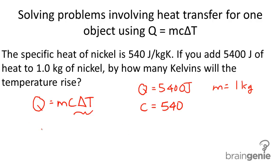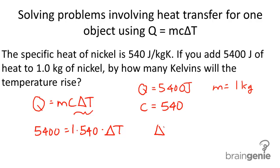So let's go ahead and plug this information in. We get 5,400 equals one times 540 times delta T. We're solving for delta T. Delta T equals 10 Kelvin, and that's your final answer.